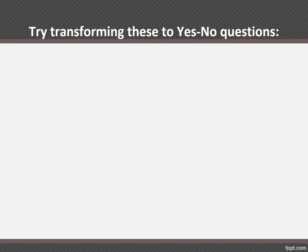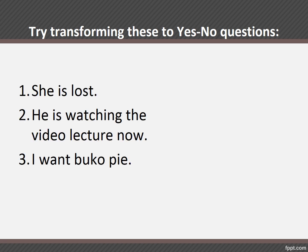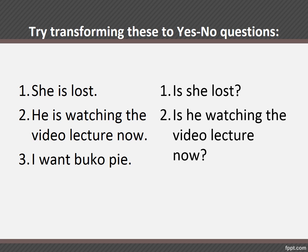So let's begin. Let's try transforming these to yes or no questions. We have three statements: 'She is lost,' 'He is watching the video lecture now,' and 'I want bokokai.' Using the same sentences: 'She is lost' becomes 'Is she lost?' The second becomes 'Is he watching the video lecture now?' and the third will be 'Do I want bokokai?' So notice, three simple sentences — we already covered the three basic rules when transforming statements to questions.